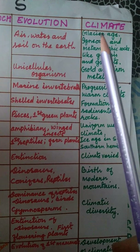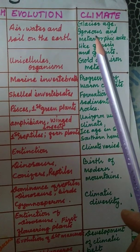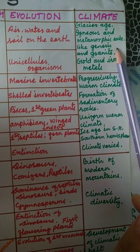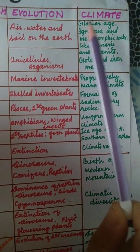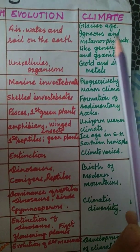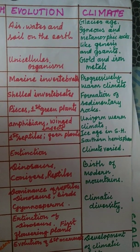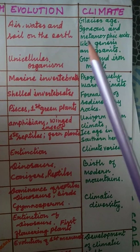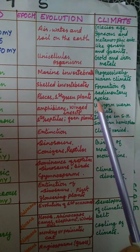Regarding climatic changes: the Earth was very hot in the beginning, then glaciers appeared. Igneous and metamorphic rocks were formed — igneous rock is formed from lava of volcanic mountains and is the parent rock, the first rock formed on Earth. Metamorphic rock is formed from igneous rock under pressure and temperature inside the Earth. Gneiss and granite rocks were formed, along with gold and iron and other heavy metals.